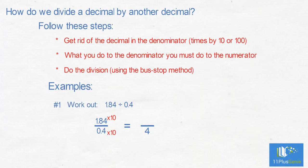Now we do the division: 18.4 divided by 4. 4s into 1 is 0. We carry the 1 over to the 8. 4s into 18 is 4 with a remainder of 2. We carry the 2 over to the 4. 4s into 24 is 6 with no remainder. 1.84 divided by 0.4 equals 4.6.